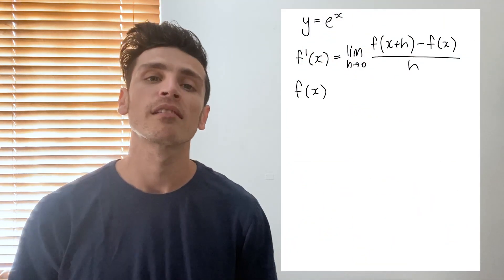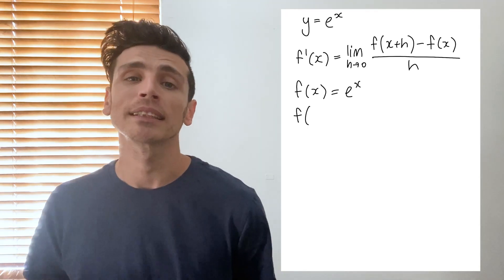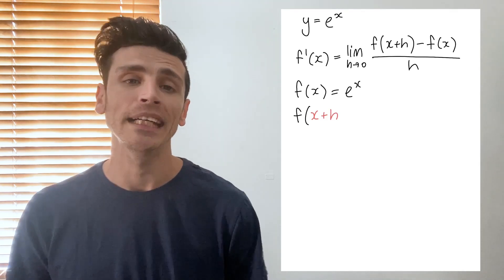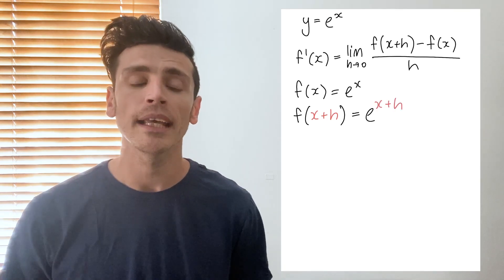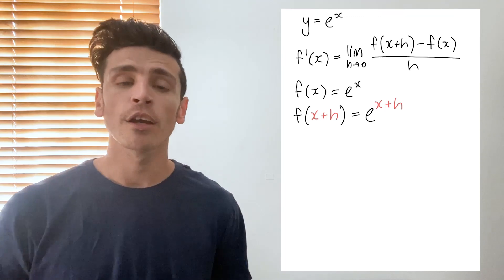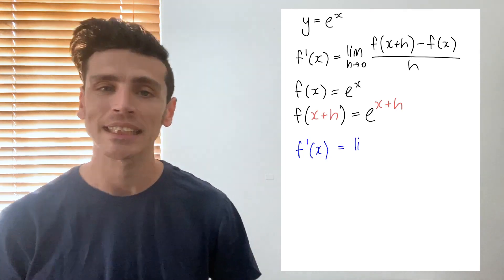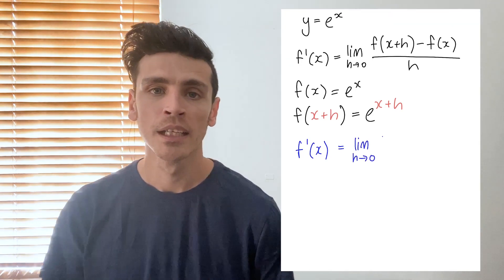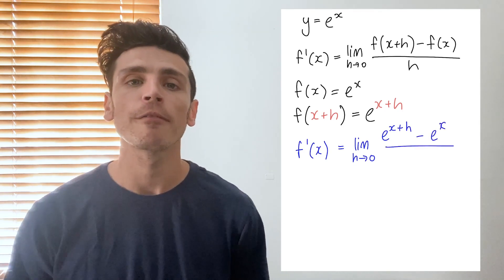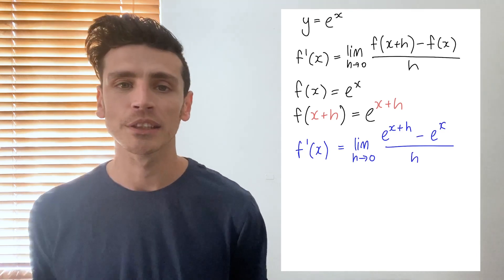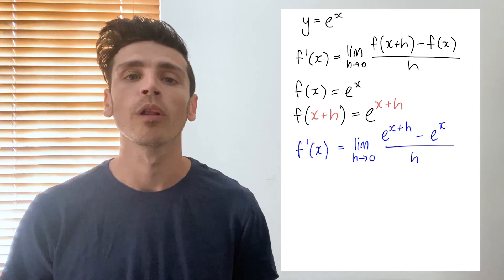Today we're going to use it to solve e to the power of x. So f(x) is going to be e to the power of x. When we're dealing with f(x+h), all we're doing is adding plus h to any place we see x. The only place we see x is in the exponent of e, so f(x+h) becomes e to the power of x plus h. Now we plug it back into our formula, giving us the limit as h approaches 0 of e to the power of x plus h, minus e to the power of x, all over h.